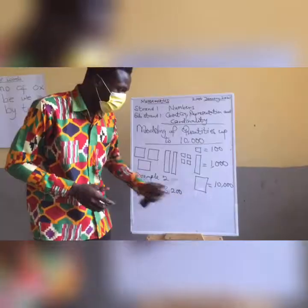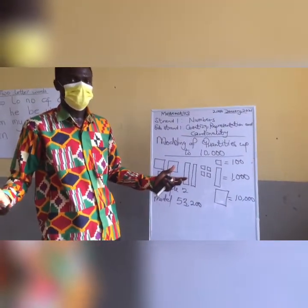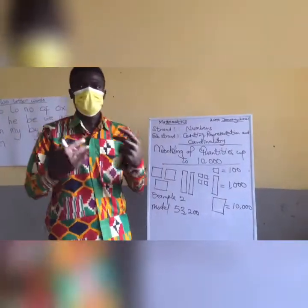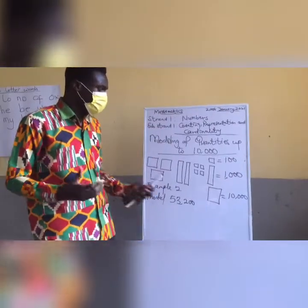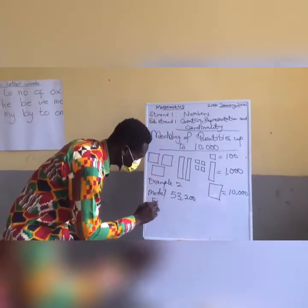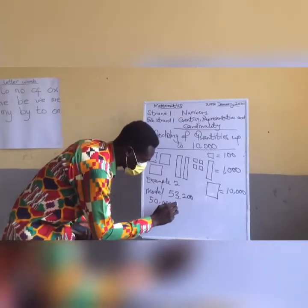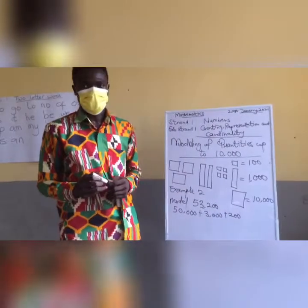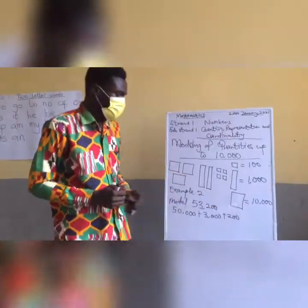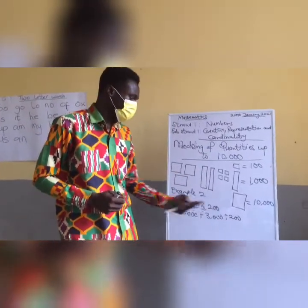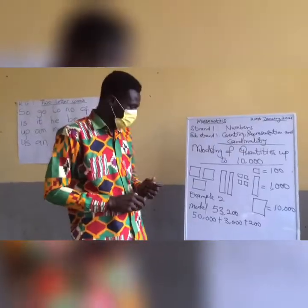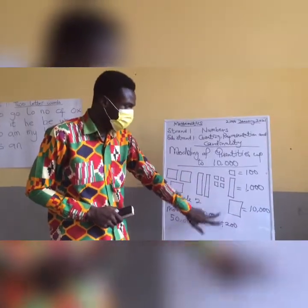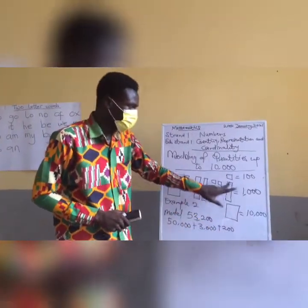We are to model the quantity 53,200. What do we do first? We expand. To expand: 53,200 becomes 50,000 plus 3,000 plus 200. The 50,000 goes with the flat, 3,000 goes with a long, and 200 goes with a block.